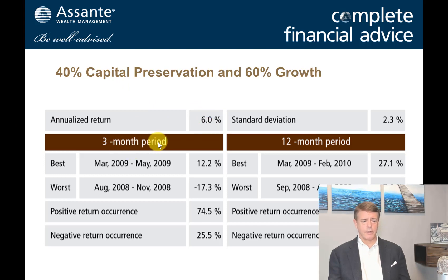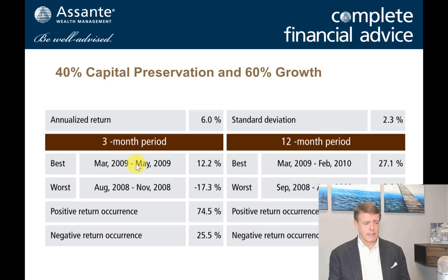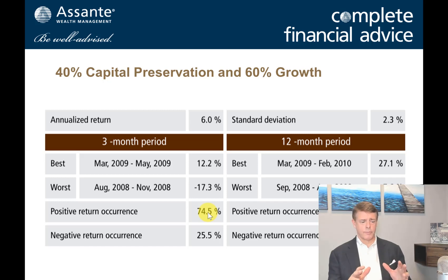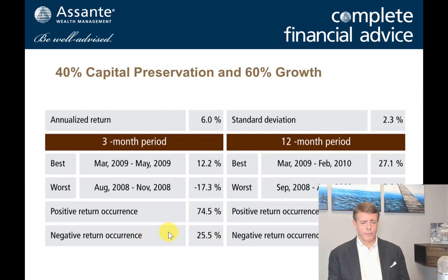If I look at the three-month periods over that decade, from 2008 through to end of 2017, the best three-month period was 12.2% to the positive, and the worst three-month period was minus 17.3%. So it would have been a very difficult period to stomach. Positive return experience occurred roughly 74% of the time — almost 75% of quarterly periods were positive, and about 25% of the time there was negative performance.